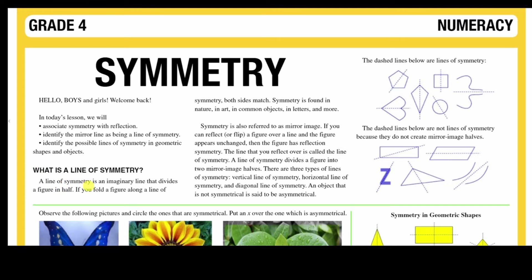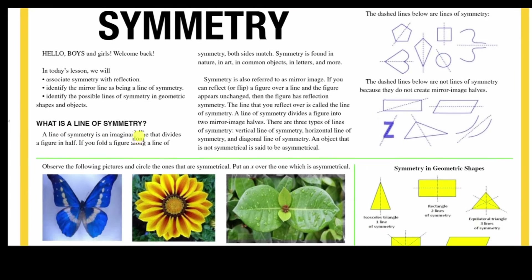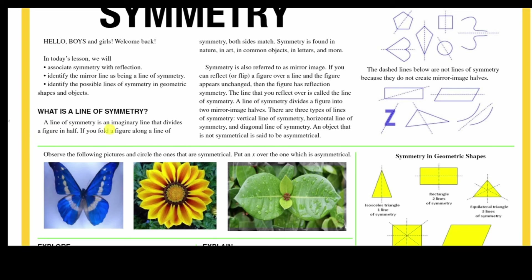Now, what is a line of symmetry? A line of symmetry is an imaginary line that divides a figure in half. You're not going to see this line out there on a flower or butterfly, but if we apply this imaginary line we'll be able to cut the figure in half. If you fold a figure along a line of symmetry, both sides match. Both sides must match.